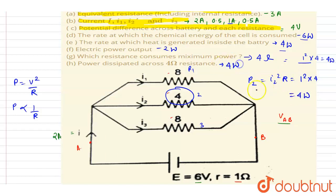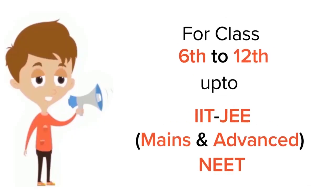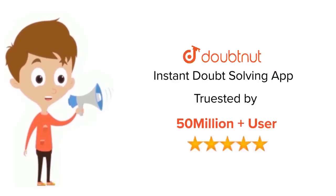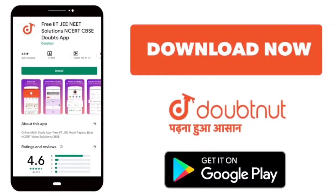So the power consumed by the 4-ohm resistor is 4 watts. These are the answers to all parts a, b, c, d, e, f, g, and h. Thank you. For class 6 to 12, IIT JEE, and NEET level — trusted by more than 5 crore students — download the DoubtNet app.